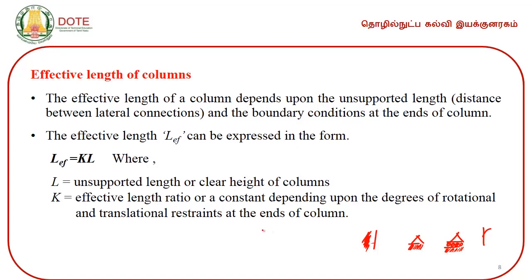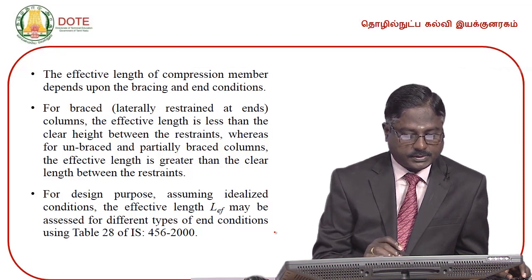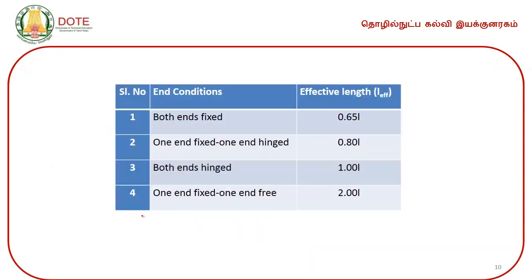One must refer to the IS 456-2000 table and pick the effective length value to use in design. If both ends of the column are fixed, the effective length is 0.65L. If one end is fixed and one end is hinged, the effective length is 0.80L. If both ends are hinged, it is 1.0L. If one end is fixed and one end is free, it is 2.0L, where L is the unsupported length.